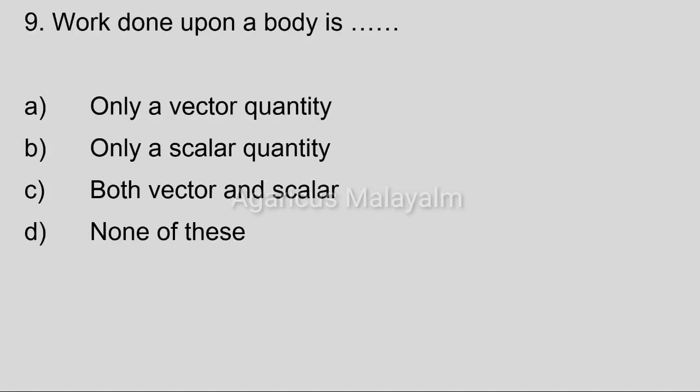Ninth question: Work done upon a body is [blank]. Answer options. Option A: Only a vector quantity. Option B: Only a scalar quantity. Option C: Both vector and scalar. Option D: None of these. Correct answer: Option B, Only a scalar quantity.